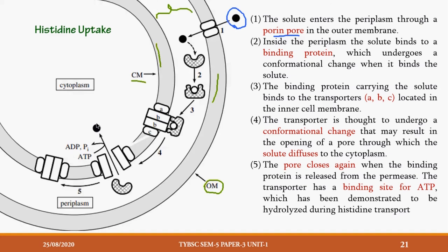Once the histidine-binding protein complex interacts with the transporter protein, the transporter undergoes a conformational change — the gate or pore opens. This allows histidine to get inside the cytoplasm. Once histidine is released inside the cell, the binding protein returns to its original structure. Since this is active transport, ATP is broken down here. The B subunit has a region to bind ATP; ATP is hydrolyzed to ADP + Pi, releasing energy used to transport histidine inside the cell.